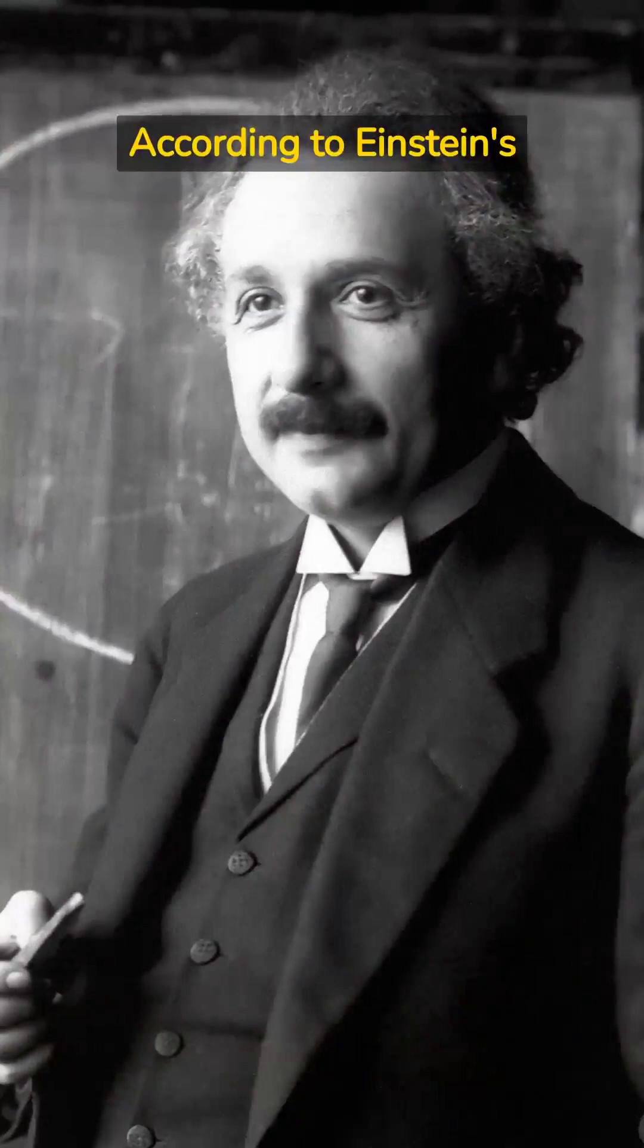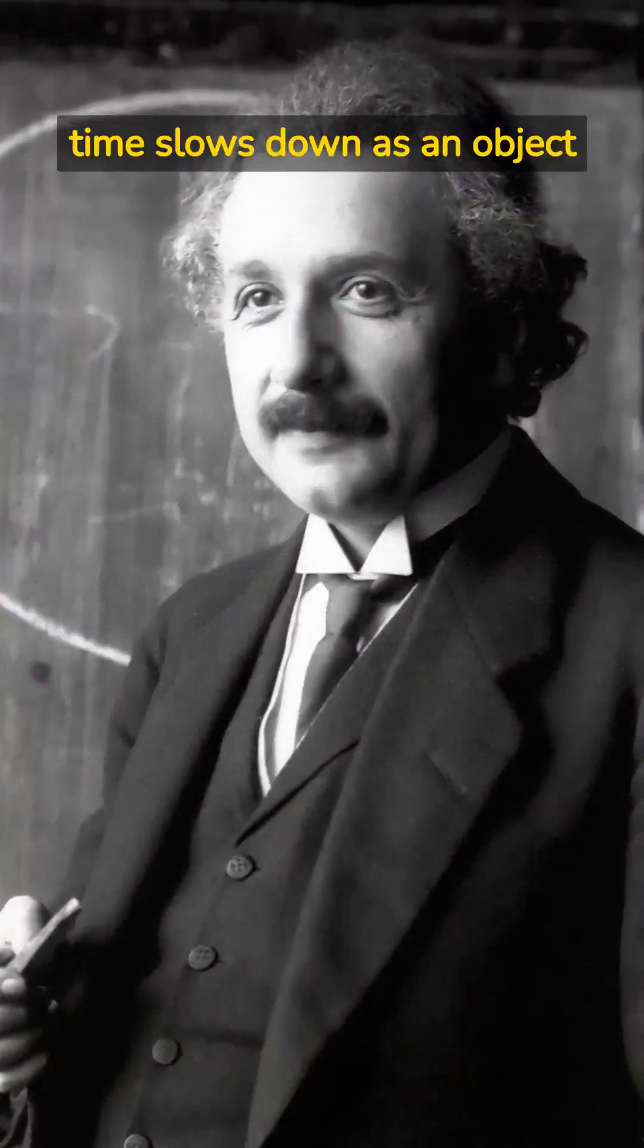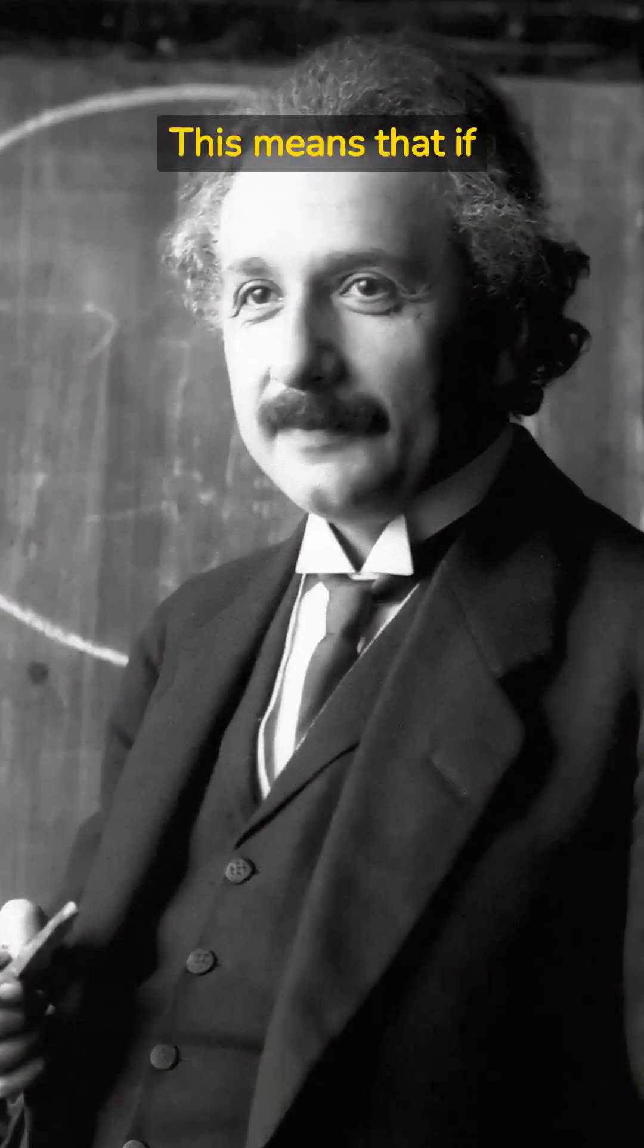According to Einstein's theory of special relativity, time slows down as an object approaches the speed of light. This means that it is possible to travel faster than the speed of light.